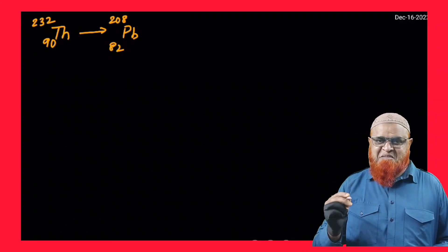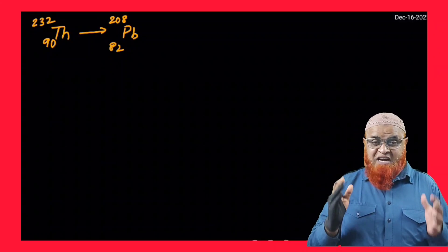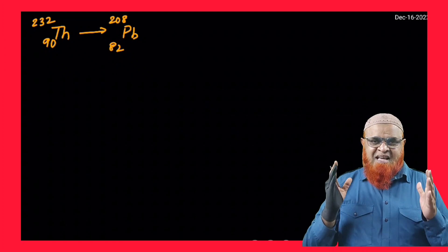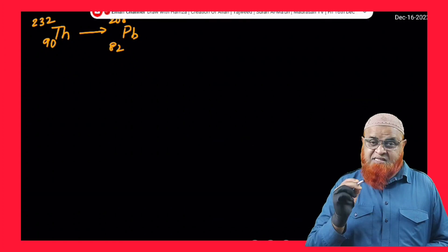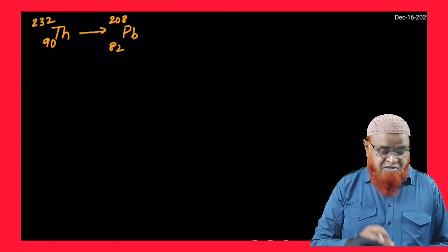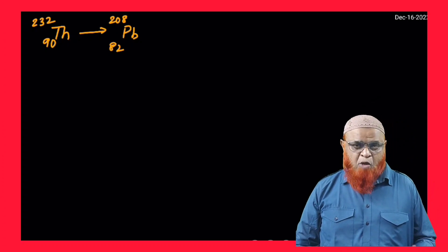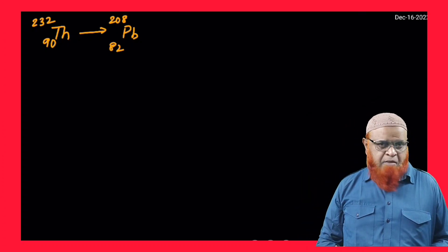My dear students, today I would like to discuss a very simple trick: how you can find out the number of alpha and beta particles in a particular radioactivity. For example, if you want to convert thorium into lead, how many alpha and beta decays have taken place? You can find out using this simple shortcut method.